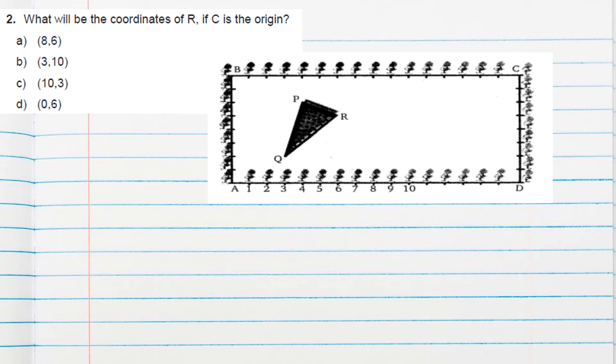Question number 2: What will be the coordinates of R if C is the origin? Okay, if C is the origin. So what we can consider, this is horizontal axis, x-axis. Okay, and means we have to revert the image.